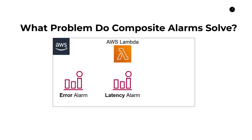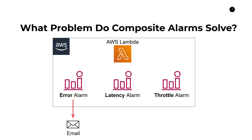The third alarm, particularly important for Lambda functions, is throttles. If a throttle alarm fires, it usually indicates something is wrong with the concurrency of our Lambda function, or too many invocations are trying to execute at once. In the old way without composite alarms, we'd create a notification on each one — an email for error alarms, a separate email for latency alarms, and another separate email for throttle alarms.